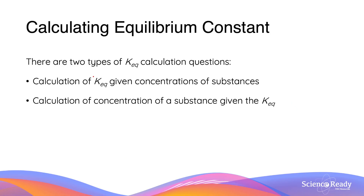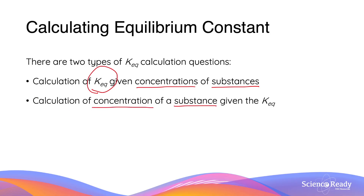When it comes to calculating the equilibrium constant, it helps to categorize questions into two different types. In exams, there are two types of Keq calculation questions: you can be asked to calculate the actual constant given the concentrations of substances, or conversely, you can be asked to calculate the concentration of a particular substance given the equilibrium constant Keq of a reaction.